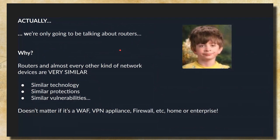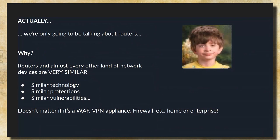Actually, we're going to be talking mostly about routers. Before you turn off your screen, let me explain. Routers and almost every kind of network equipment — firewalls, VPNs, WAFs — are very similar. They have similar technologies, similar protections, and similar vulnerabilities. And this doesn't matter if we're talking about home or enterprise devices, a router, a WAF, or a VPN appliance.